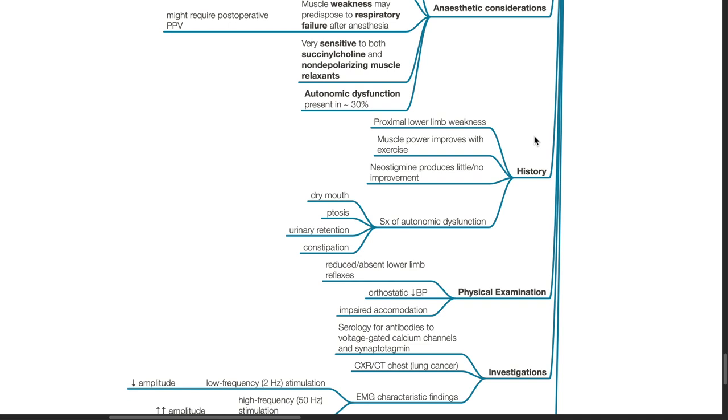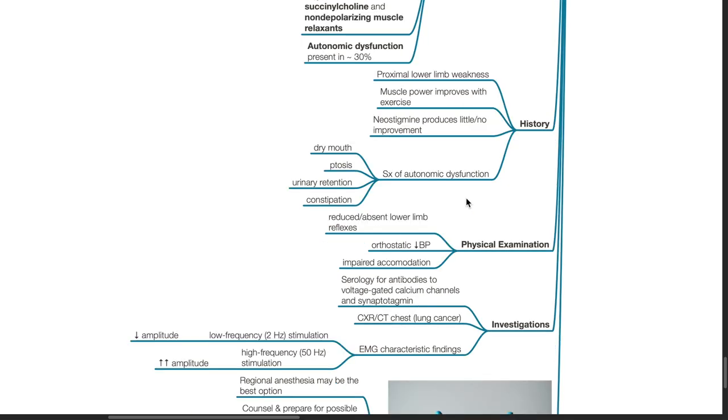History. Assess for distribution and severity of muscle weakness. Muscle power improves with exercise. Neostigmine produces little or no improvement. Assess for symptoms of autonomic dysfunction as mentioned previously.